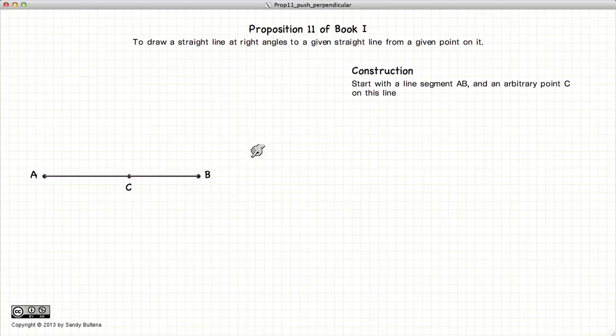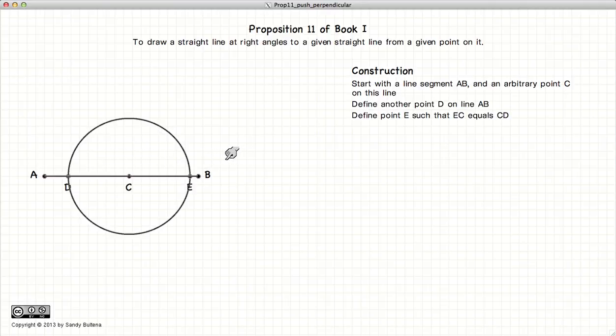So let's start with our line AB and our point C. The first thing we're going to do is to find two points D and E so that they are both equidistant from the point C. And we do this by drawing a circle.